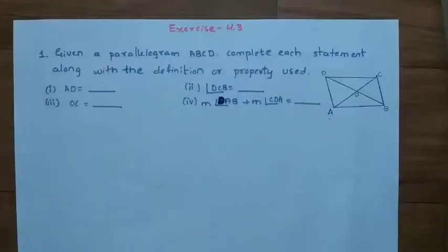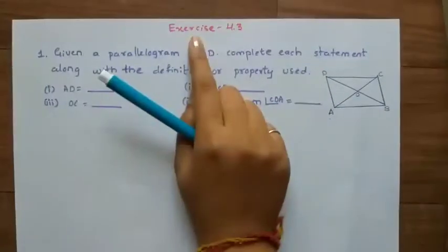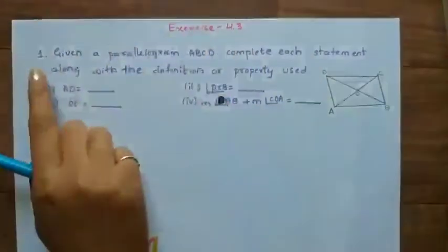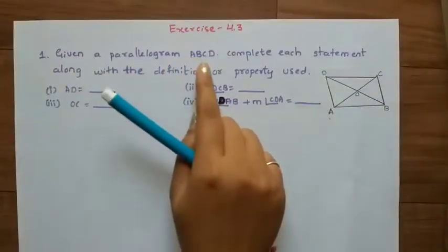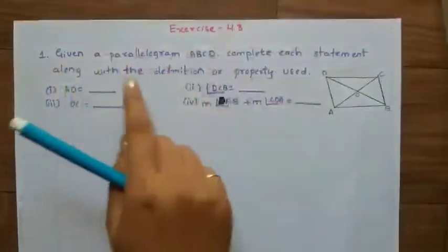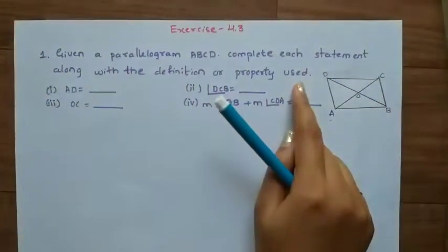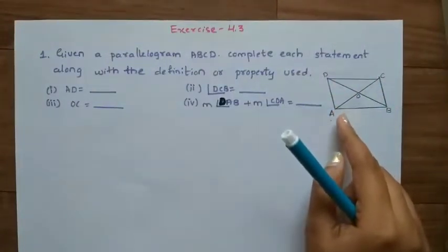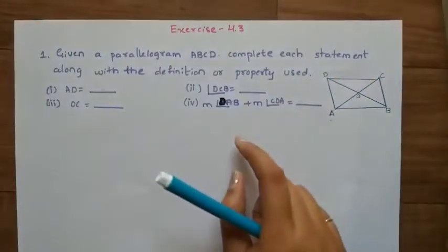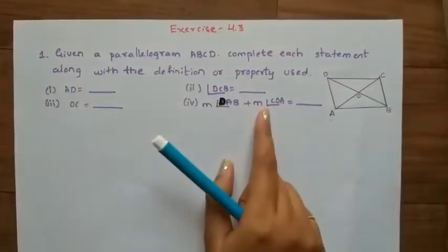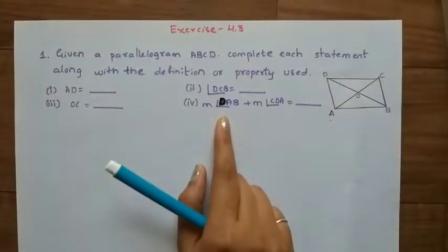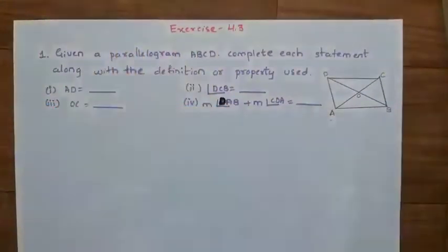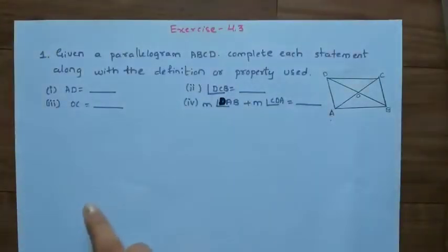Hello friends. In the last class we discussed about quadrilaterals and types of quadrilaterals. In this class I am going to discuss Exercise 4.3. So let's see the question: given a parallelogram ABCD, complete each statement along with the definition or property used. Here they give a parallelogram ABCD with vertices A, B, C, D, and we have to fill in all statements using the concepts, definitions and properties of a parallelogram.